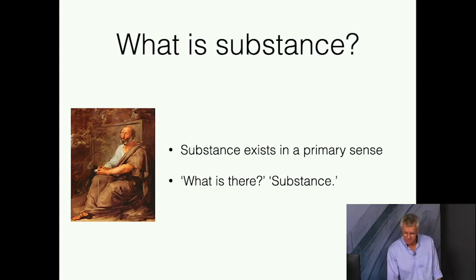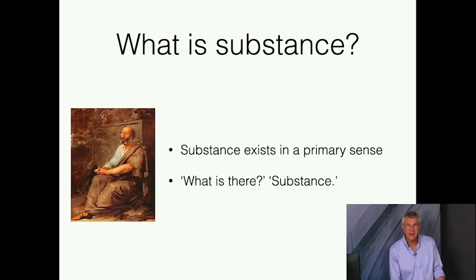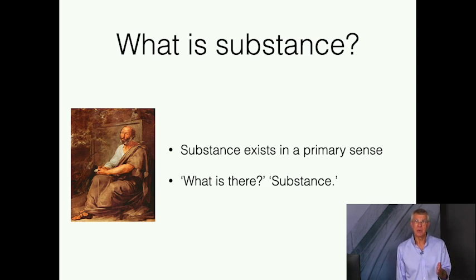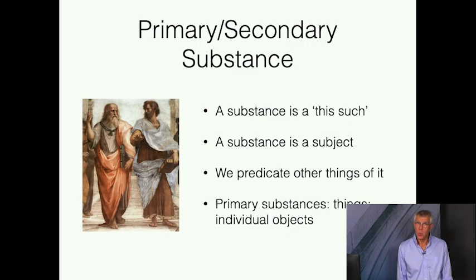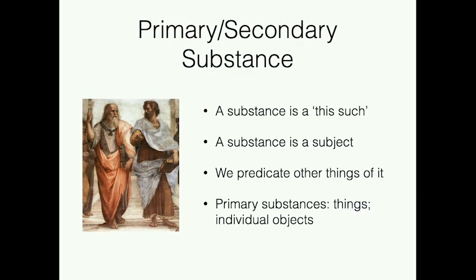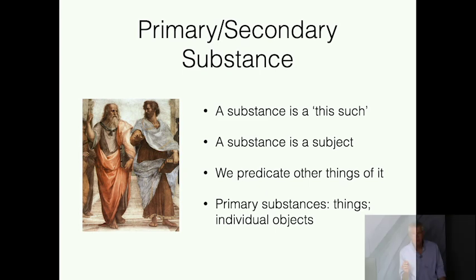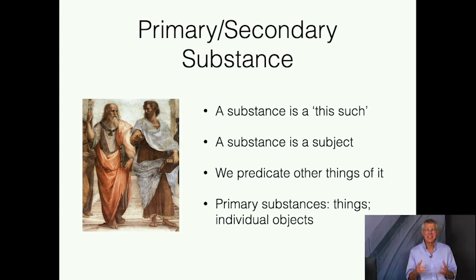What really exists? The basic question of metaphysics is really the question, what is there? And the answer is substance. Substance is what exists in a primary sense. But before we tackle that question more completely, we need to draw a distinction relating to substances as this-such — particular things of a kind. It's the distinction between primary and secondary substances. A substance is a this-such, particular thing of a kind. It is also a subject — we predicate other things of it. We say the horse is running, or the man is standing.